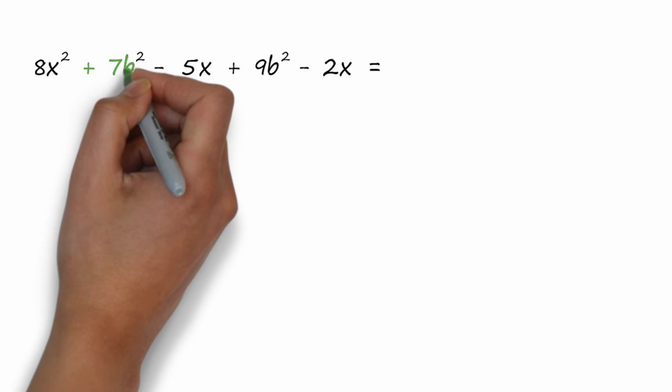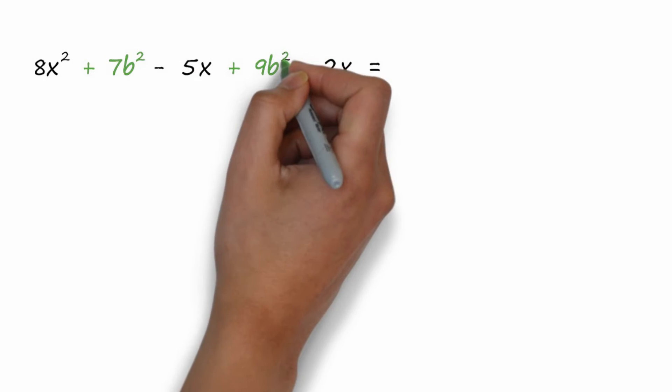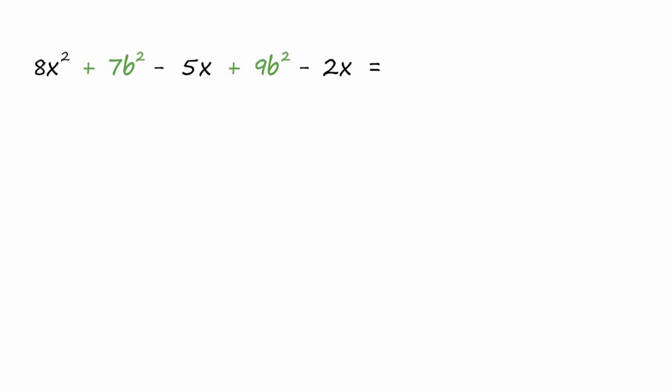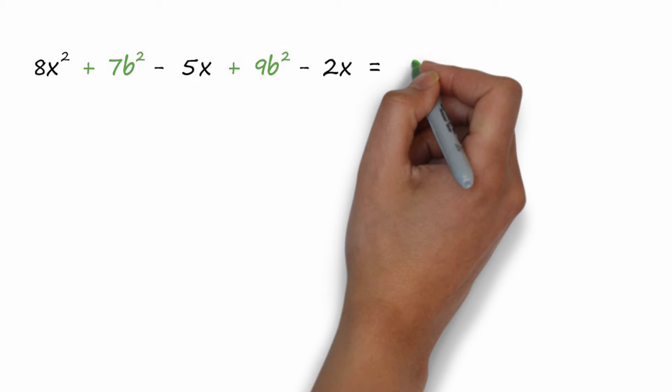Well, we have 7b² and we have 9b². And if we add those two together, it would be 16 and the letters would be b².